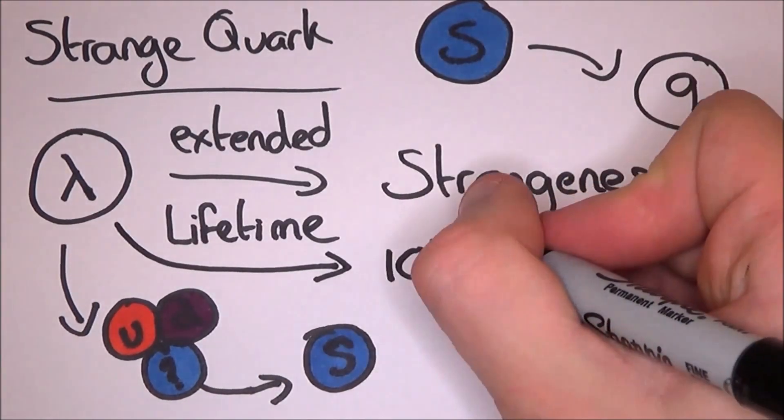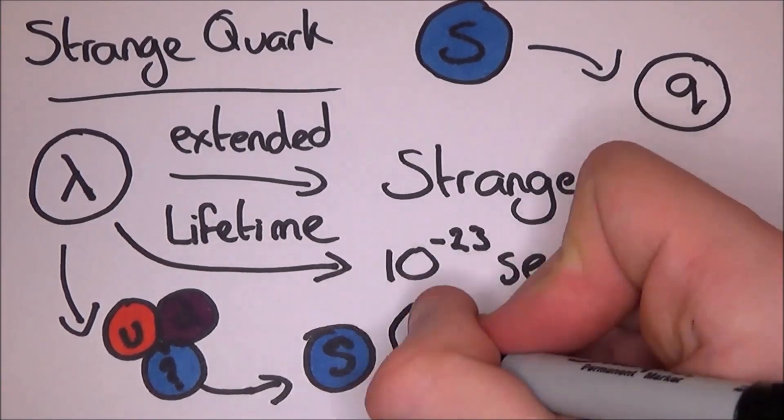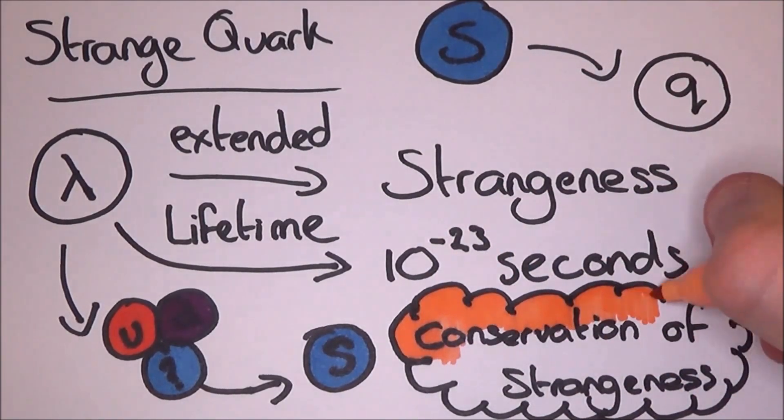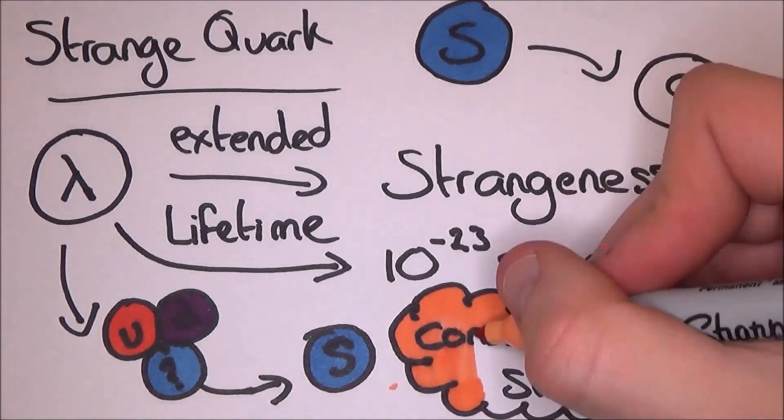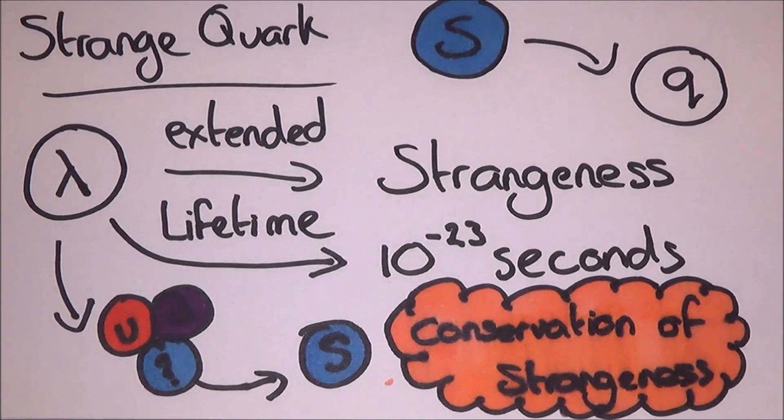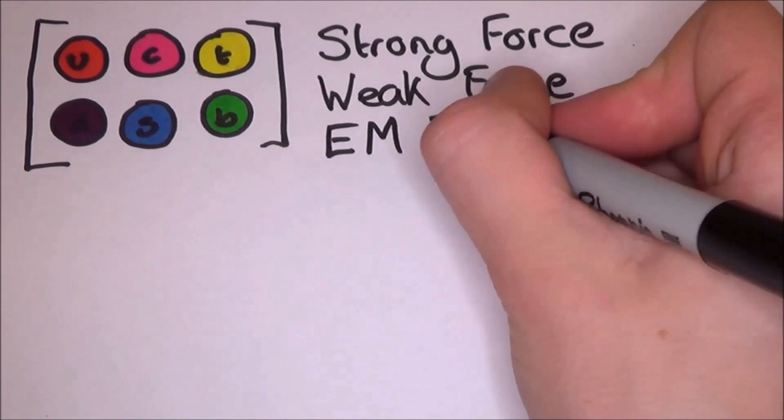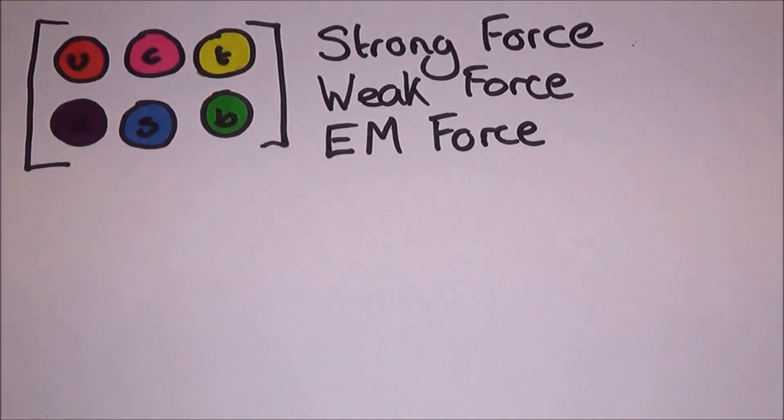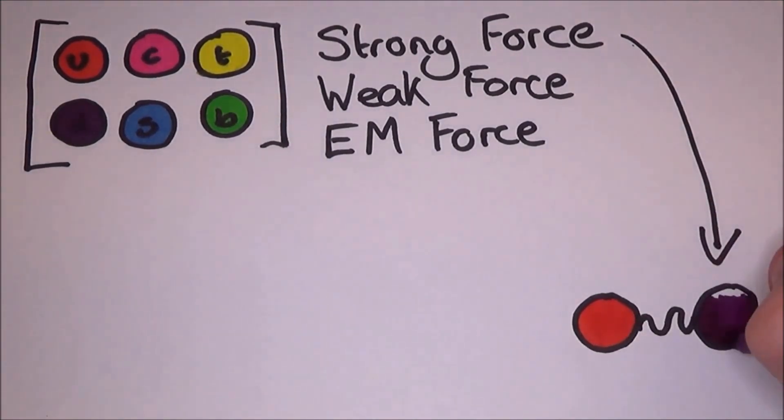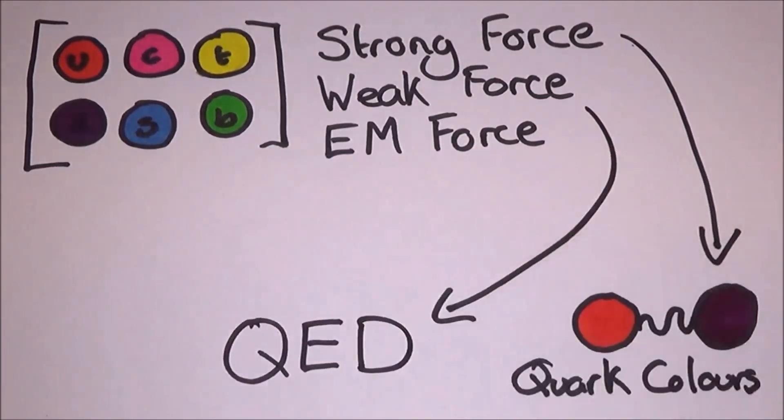Lambda was expected to live for about 10 to the minus 23 seconds as the lambda particle is involved in the strong interactions, which normally leads to a very short lifetime. But this new extended lifetime brought about conservation of strangeness. The issue is that in order for it to stick around so long, the strange quark needs to change into other types of quarks in order to sustain this lifetime. All the quarks are affected by the strong nuclear force, the weak nuclear force, and the electromagnetic force. The strong nuclear force is obvious due to the fact that they stick together because of the strong nuclear force. This is due to quark colours, but I'll talk about that in a second. They are also affected by the weak nuclear force by quantum electrodynamics.